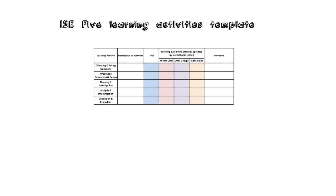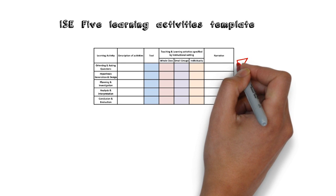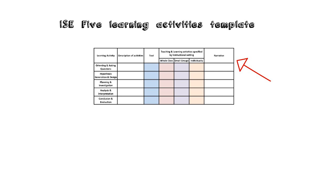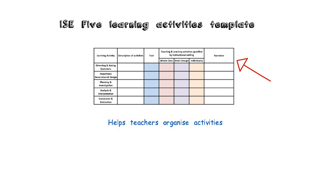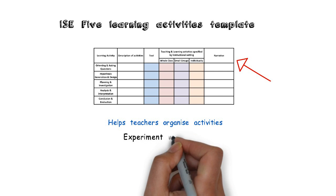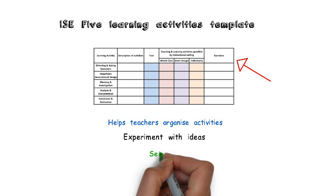To help with the process of developing these five learning activities, the ISE have created a template encouraging teachers to write a narrative for their lesson plan. It helps teachers to organize their inquiry activities and to highlight areas of focus. It also allows them to experiment with different ideas and set realistic goals for student achievement.